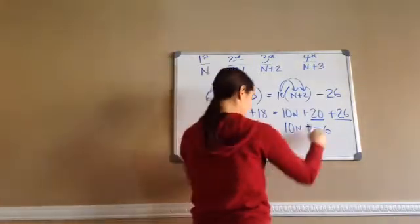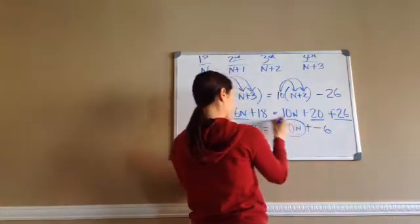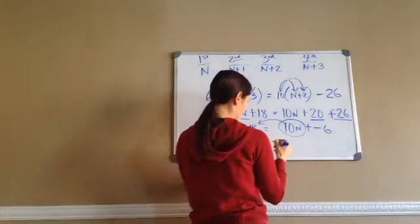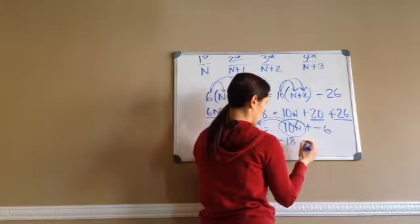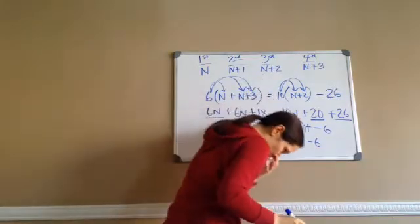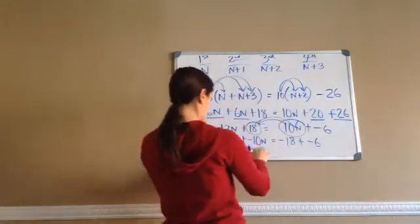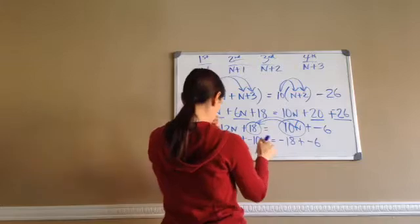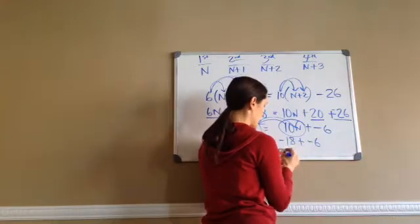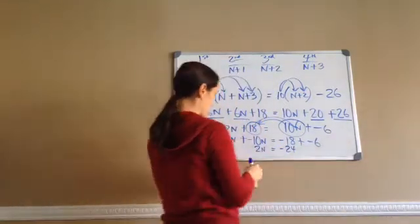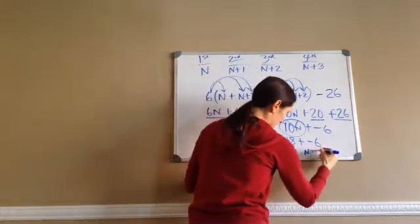Now I'm going to put all my n's together. 12n, and this positive 10n will become negative 10n when brought across. Equals: this positive 18 becomes negative 18 plus negative 6. So 12n plus negative 10n gives me 2n, and negative 18 plus negative 6 is negative 24. Two times what equals negative 24? So my n would be negative 12.